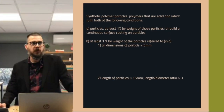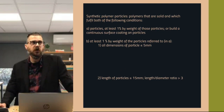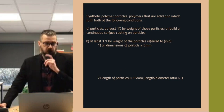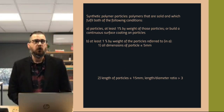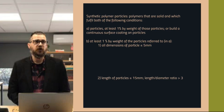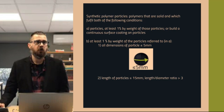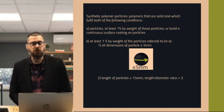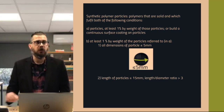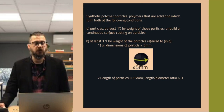The legal definition for microplastics: there are synthetic polymer particles — polymers that are solid — which fulfill the following conditions. A: they are particles, at least 1% by weight of those particles, or they build a continuous surface coating on those particles. B: at least 1% by weight of the particles is referred to. All dimensions of the particle are equal to or smaller than 5 millimeters — like when you take a nurdle or a spherical particle, all dimensions will be smaller or equal to 5 millimeters.